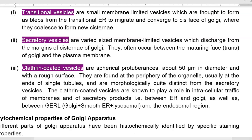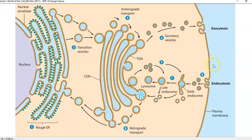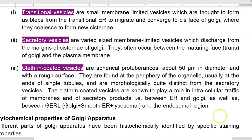The second type is secretory vesicles. They are varied in size, membrane-limited vesicles that play a role in discharging contents to the margins of the cisternae of the Golgi. They often occur between the manufacturing phase of the Golgi and the plasma membrane. The third type is clathrin-coated vesicles — spherical protuberances of 50 nanometers in diameter with a rough surface, found at the periphery of the organelle, usually at the ends of tubules. Clathrin-coated vesicles play a role in intracellular trafficking of membranes and secretory products between the endoplasmic reticulum and Golgi body.